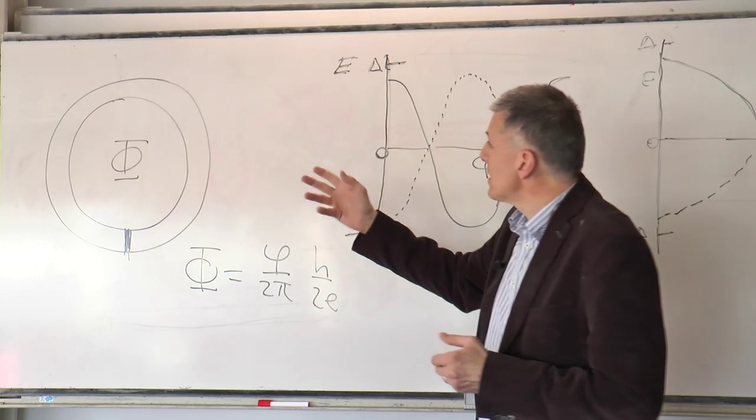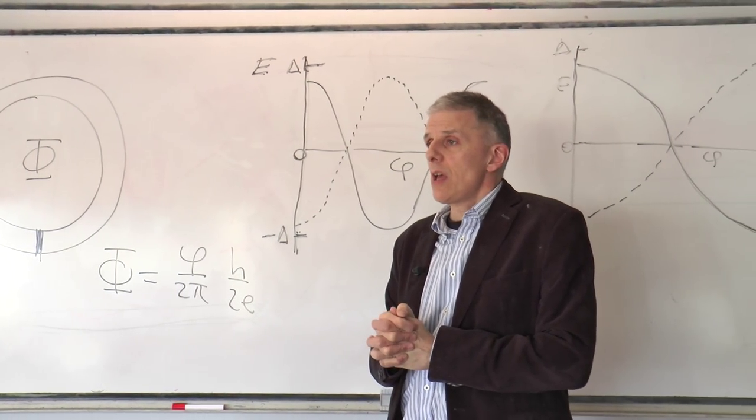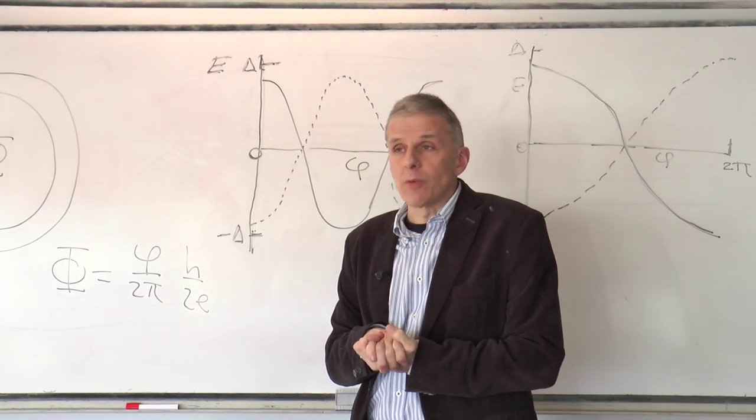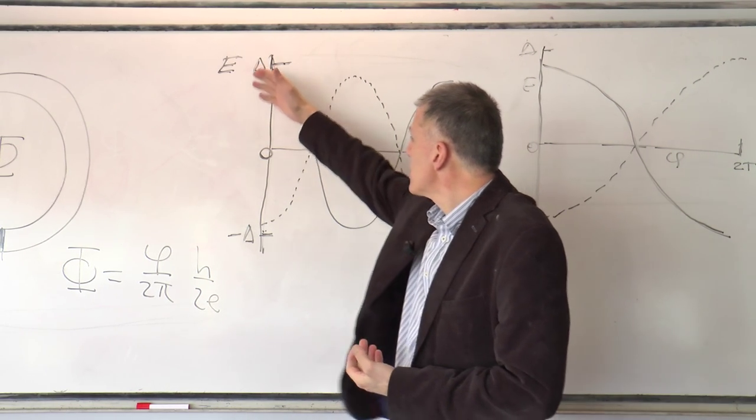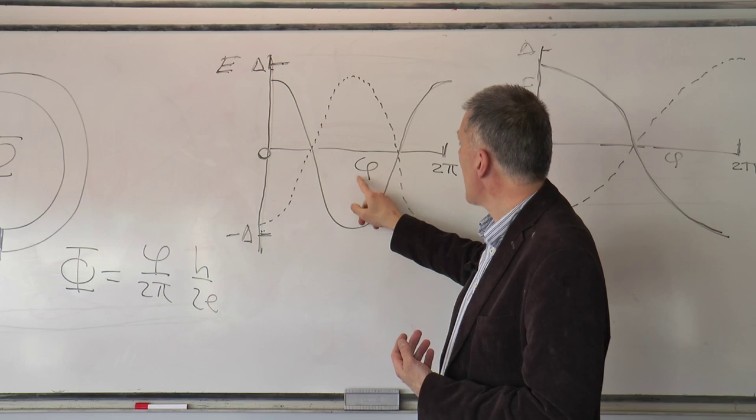And then we can ask what is the spectrum, the excitation spectrum of this Josephson junction. And this has a structure which we have encountered before. So there is an energy axis, in this case there is a phase or flux axis.